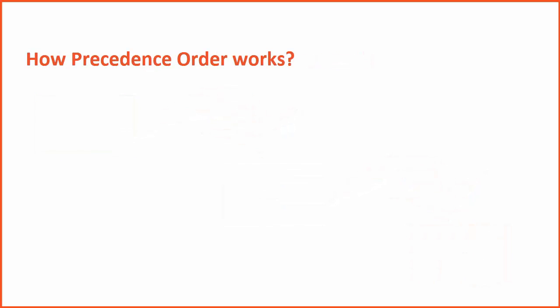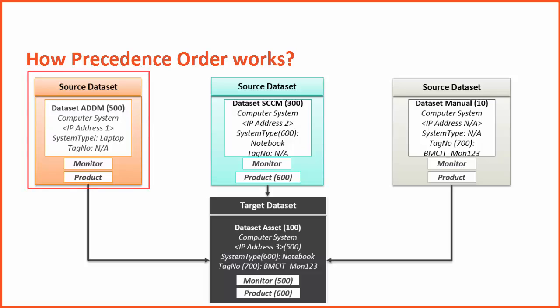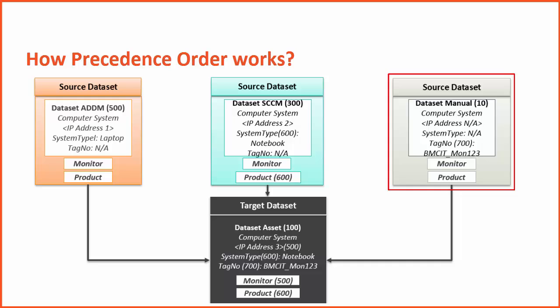Let us now consider an example to further understand precedence order. Consider that you have three source datasets. The first source dataset is populated by ADDM, which is primarily used for discovery of servers. SCCM populates the second source dataset, and SCCM is used for client discovery. The third source dataset is the manual dataset to manually discover certain CIs that may not be discovered by ADDM or SCCM.